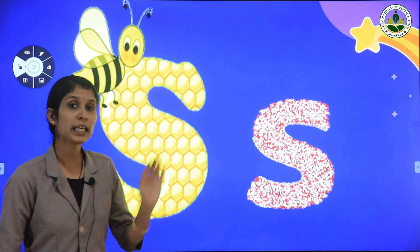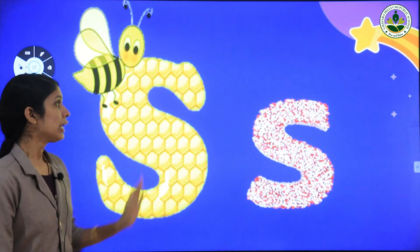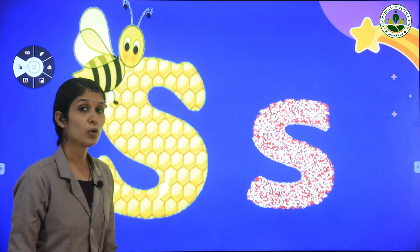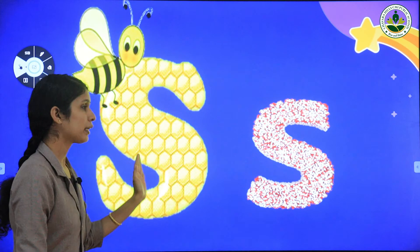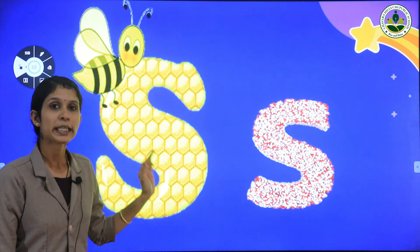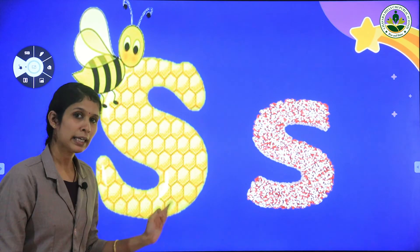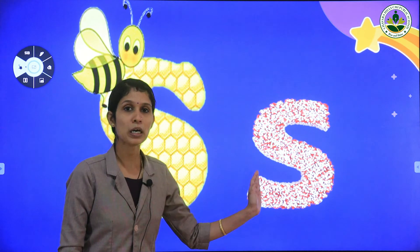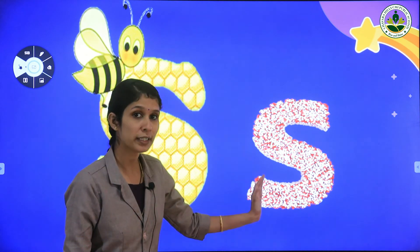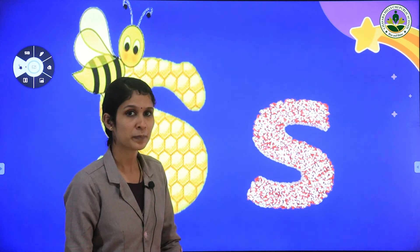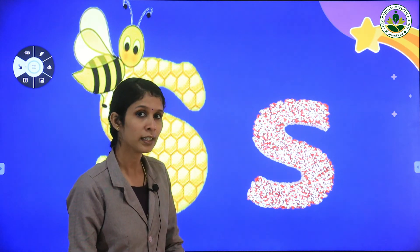Repeat after me. Very good. Letter S has capital letter S and small letter S. All of you say aloud: capital letter S. Once more, capital letter S. And this is our baby S — small letter S. Once more, small letter S.